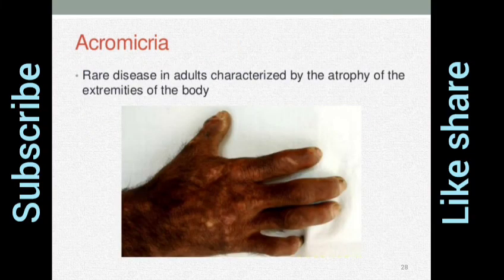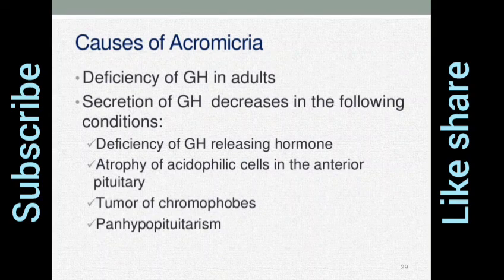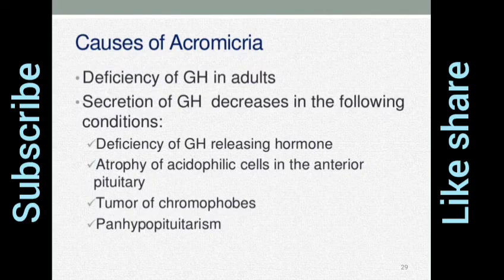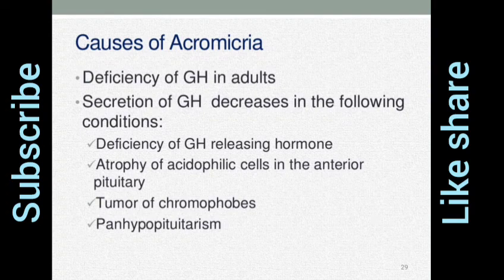Acromicria: a rare disease in adults characterized by the atrophy of the extremities of the body. Causes of Acromicria include deficiency of GH in adults. Secretion of GH decreases in the following conditions: deficiency of GH releasing hormone, atrophy of acidophilic cells in the anterior pituitary, tumor of chromophobes, and panhypopituitarism.